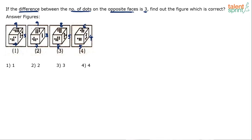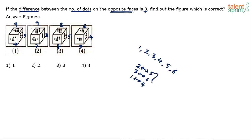In a die, the numbers are 1, 2, 3, 4, 5, and 6. Since the difference between the number of dots on opposite faces must be 3, the opposite pairs should be: 2 opposite to 5, 3 opposite to 6, and 1 opposite to 4. In all three cases the difference equals 3. Now you know the rule: opposite faces will never come together in an angular view of a die.